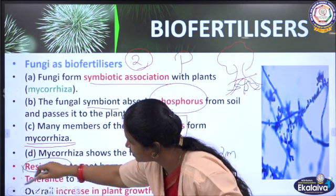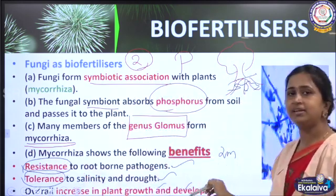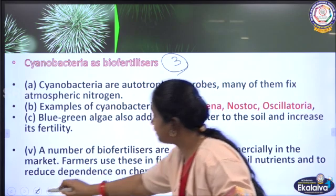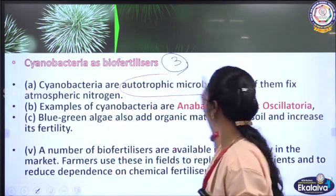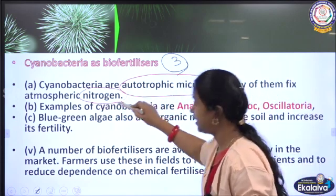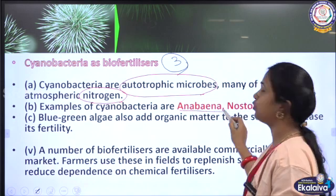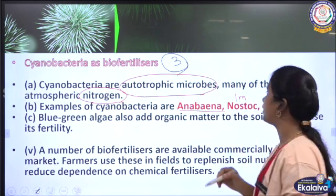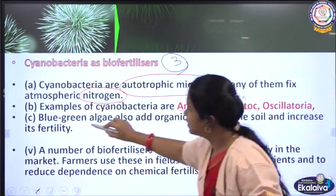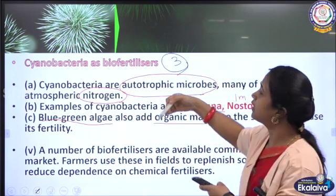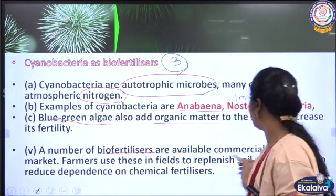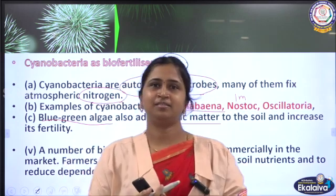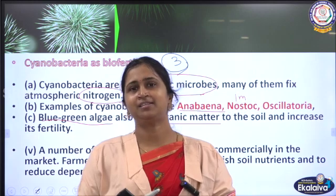Cyanobacteria are autotrophic microbes, and many of them fix atmospheric nitrogen. Examples of cyanobacteria include Anabaena, Nostoc, and Oscillatoria — these are also called blue-green algae. A number of bio-fertilizers are available commercially in the market and can be used in agriculture. To receive our online lessons, please press the subscribe button to receive the latest updates.